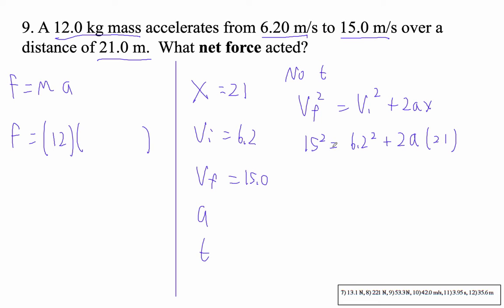All right, 15 squared, 225, 6.2 squared, 38.44, and then plus 42A. Okay, I'm going to subtract here. So 225 minus that is 186.56. That equals 42A.